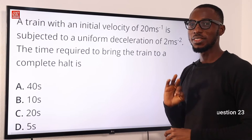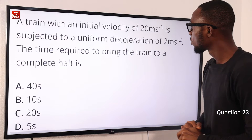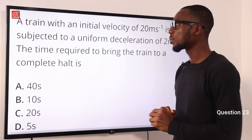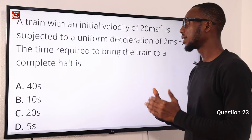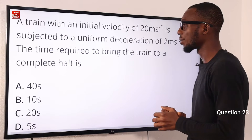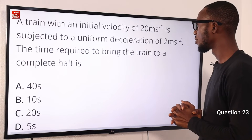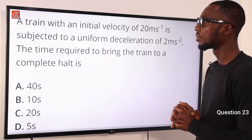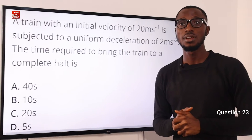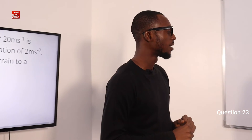Number 23. A train with an initial velocity of 20 meters per second is subjected to a uniform deceleration of 2 meters per second squared. The time required to bring the train to a complete halt is what? Let's go to the board and provide solutions to this question.